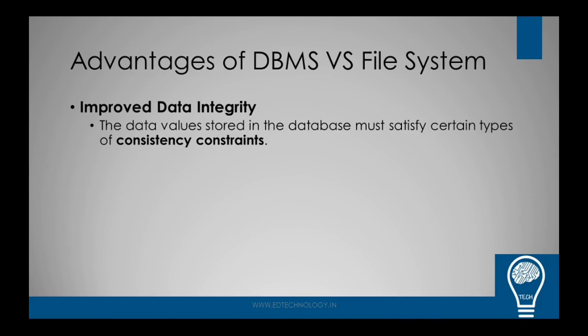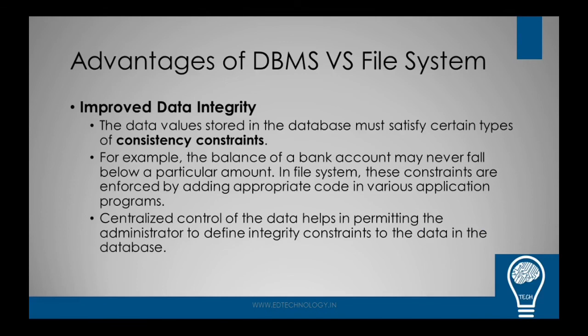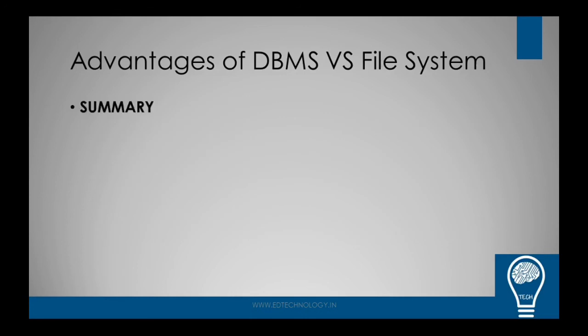Next up is improved data integrity. The data values stored in the database must satisfy certain types of consistency constraints. If those constraints are properly enforced, the values are trustworthy. For example, the balance of a bank account may never fall below a particular amount — we all have those limits in bank accounts and credit cards. In the file system, these constraints are enforced by adding code in various application programs, which may or may not work and can generate issues. In DBMS, centralized control of data permits the administrator to define integrity constraints, which is a clear advantage.